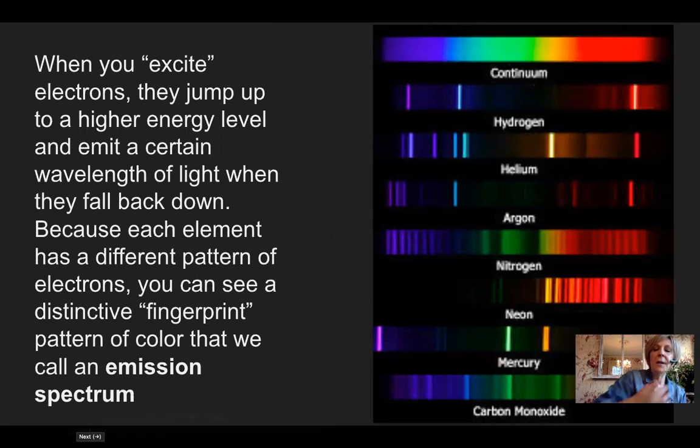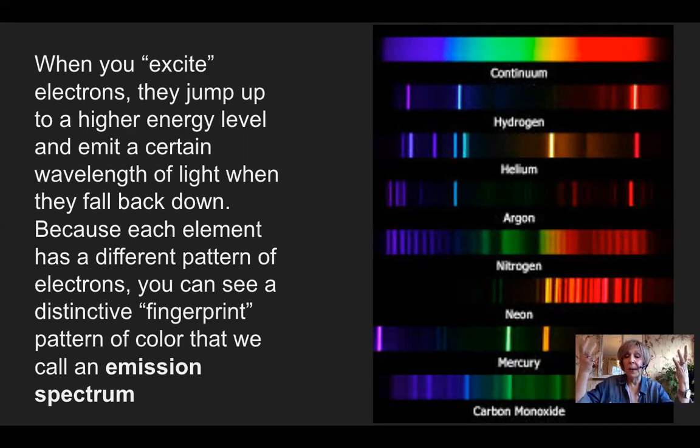So we know that when you excite electrons, when you put heat or electricity or radiation into an atom, the electrons get excited and they jump up to a higher energy level. And when they come back down, they give off what we call a photon of light.